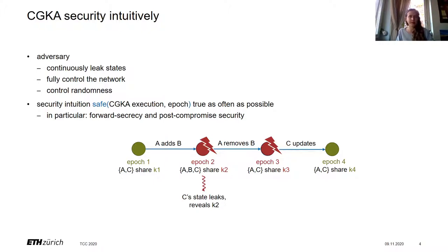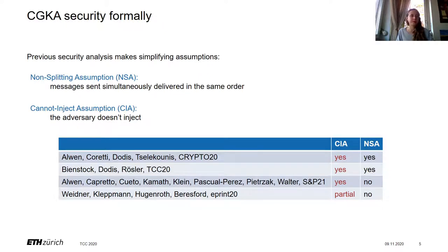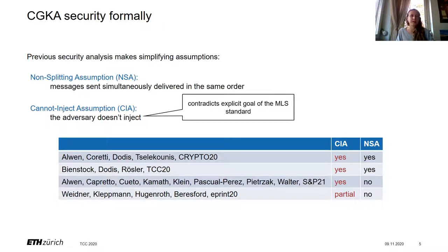This is the intuition, but it's important to make it formal, to make formal claims about protocols like TreeKEM. This has been done, but not fully satisfactorily, because all previous security analyses make at least one of two simplifying assumptions. The first, called the non-splitting assumption (NSA), means that if many messages are sent simultaneously, an external mechanism orders them and everyone receives them in the same order. The second, called the cannot-inject assumption (CAA), means the adversary doesn't inject messages — which contradicts an explicit requirement in the MLS standard. It's also not enough to add signatures to achieve CAA, because if a party is compromised, their signing keys leak, allowing the adversary to impersonate the user.